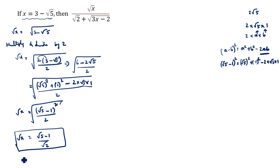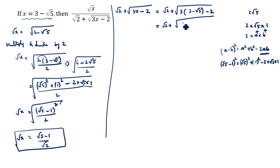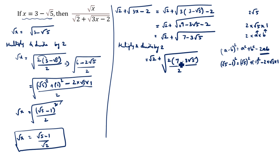After that, we will find √2 plus √(3x minus 2). Substituting x = 3 minus √5: √2 plus √(3(3 minus √5) minus 2) equals √2 plus √(9 minus 3√5 minus 2), which equals √2 plus √(7 minus 3√5).